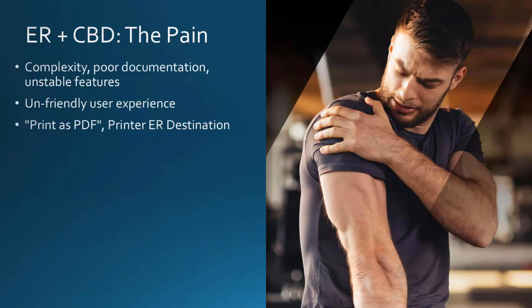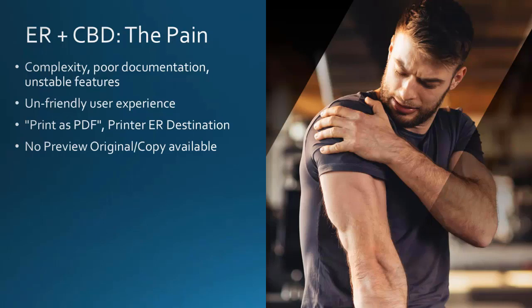We noticed one more important limitation: direct printing from electronic reporting assumes PDF conversion, which doesn't support custom fonts, including barcode fonts. Preview original or copy is not available — it executes equally as print through print management. The reason is that you always get what is configured in electronic reporting destinations. So there is no way to perform a quick check on screen for non-batch situations and then download or print directly from the preview. Also, CBDs are applicable only to print management reports — we can't use them for other often-used reports, for example product route card.